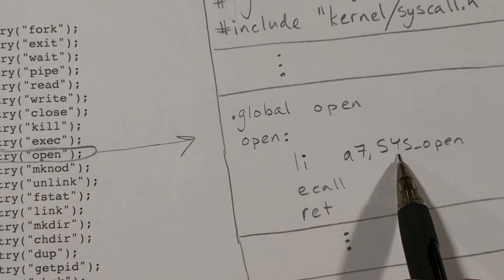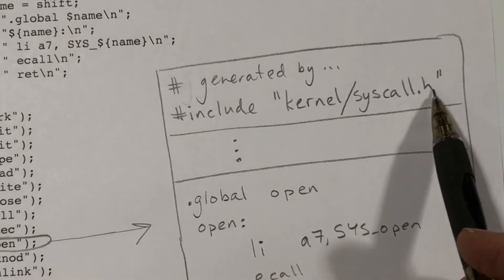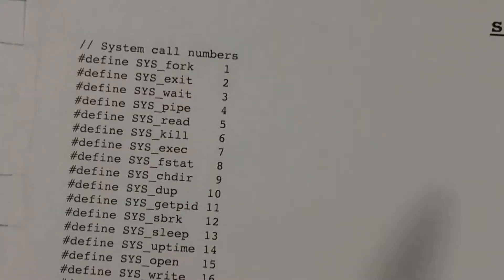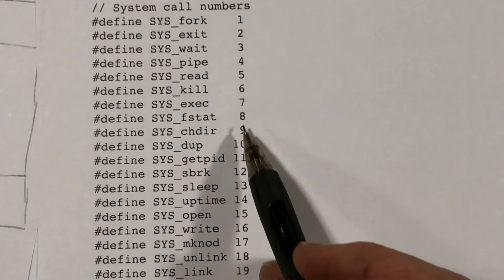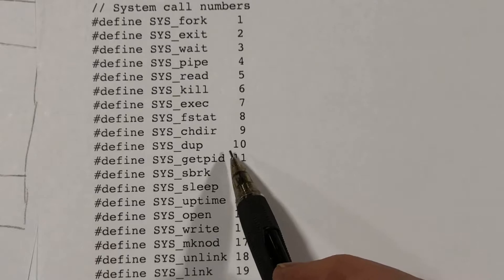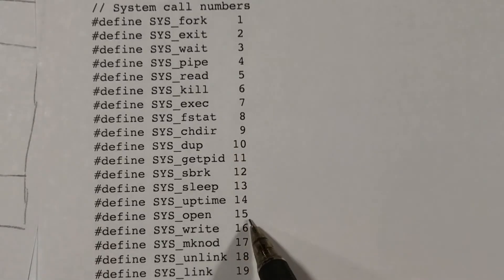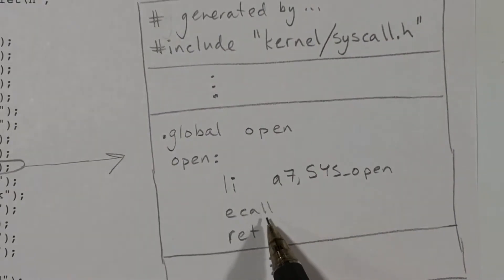sysopen is just a number, and we see that we are including syscall.h. Well, here is syscall.h. All it has is a collection of defined statements, and for each of the 21 system calls, it associates a number. In our example, we're looking at open, so we see that open has a number of 15. So all this does is move a 15 into register a7, and then execute the ecall instruction.